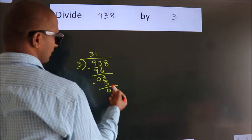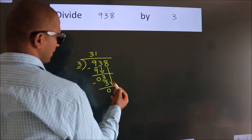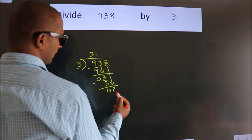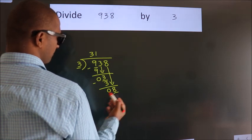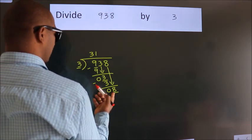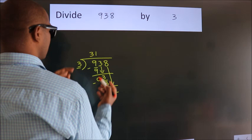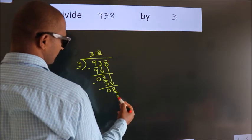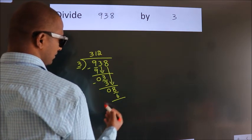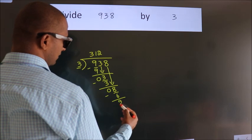After this, bring down the next number. So 8 down. So 8. A number close to 8 in 3 table is 3 twos 6. Now we subtract. We get 2.